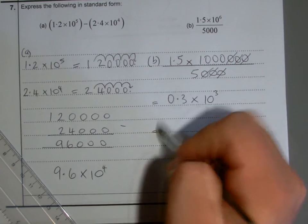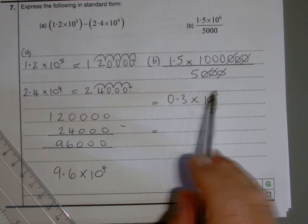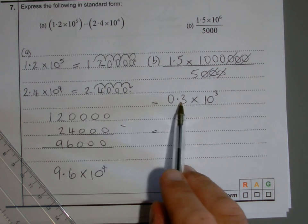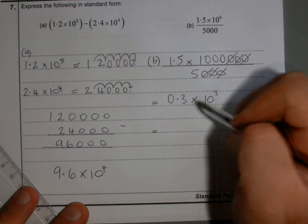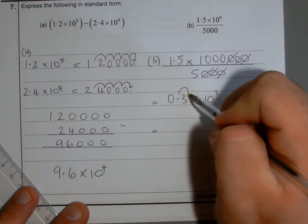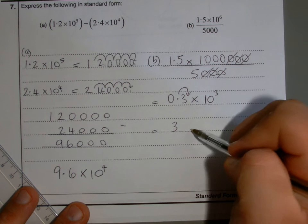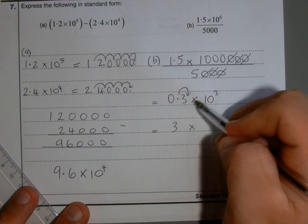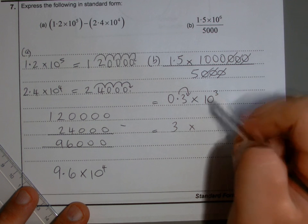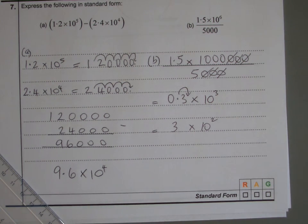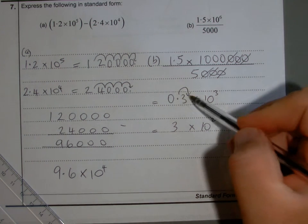Now, we wanted it in standard form, and that looks like standard form. However, the number's got to be between 1 and 10, and that isn't - the decimal point is in the wrong place. It's got to move one place to the right, and then we've got 3, which is between 1 and 10. But if I move that one place to the right, we've then got to reduce this power, so it becomes 10 to the power 2.